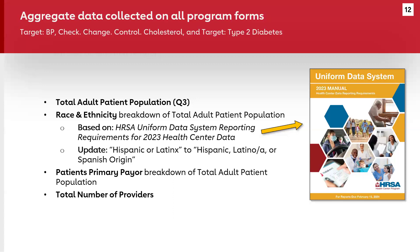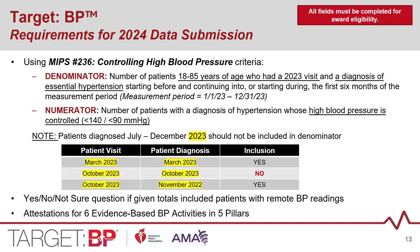For Target BP specifically, we use MIPS 236, the Controlling High Blood Pressure measure. The denominator is adult patients 18 to 85 years of age who had a visit during calendar year 2023 and had a diagnosis of essential hypertension either before 2023 or during the first six months of 2023. The numerator asks: of those patients, do they have their blood pressure controlled to less than 140 over 90? For example, a patient first diagnosed with hypertension in March 2023 who had a visit in March would be included. A patient first diagnosed in October 2023 would be excluded. A patient with a visit in October 2023 but diagnosed in November 2022 would be included.